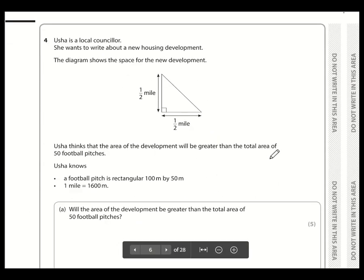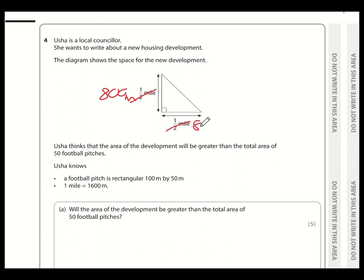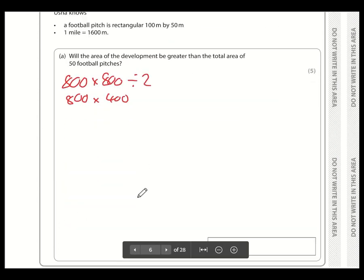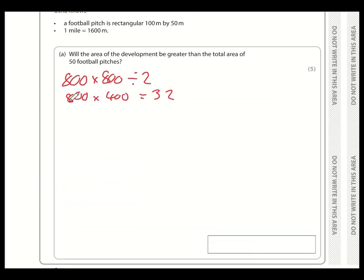Okay, question number four. So the first thing that I think is sensible is turning these dimensions into metres. So one mile is 1600. So half a mile is going to be 800 metres. So let's work out the area. This is a triangle. So the formula for the area of a triangle is base times the height divided by 2. So we could just say that that is 800 multiplied by 400. 8 times by 4 is 32. And then just put those four zeros back in. There we go. So that is the area of the development.